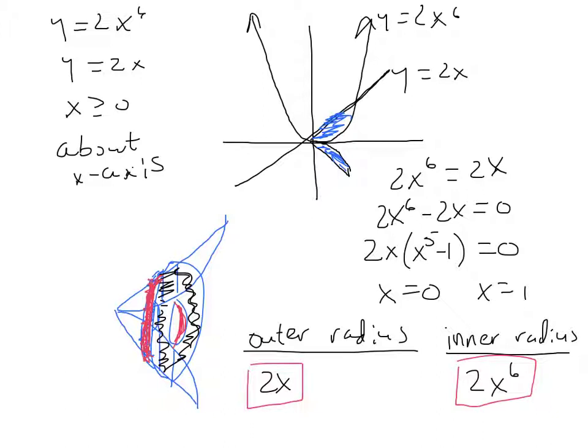We could find the volume of the solid by rotating the region bounded by just the line and x equals one, and then subtracting from that the hole that's going to go through this entire object, which would be the volume if we rotated the curve y equals 2x to the sixth about the x-axis from zero to one.